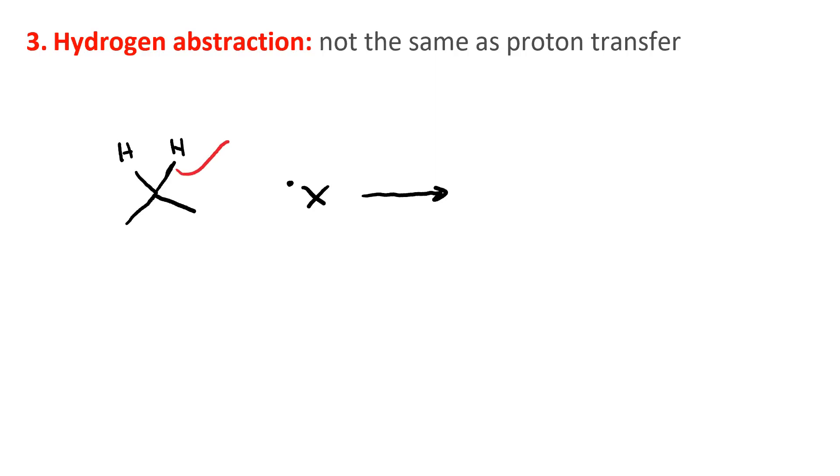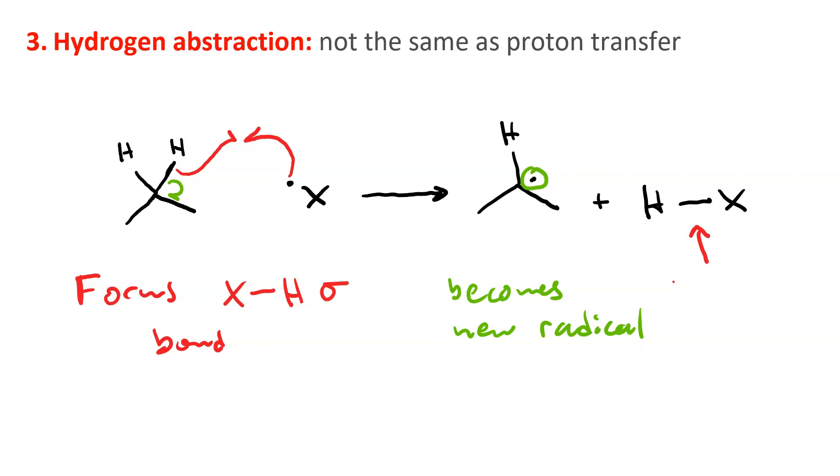One of the electrons from the CH sigma bond couples with the radical electron to form a new CH sigma bond. And the other electron from the CH bond becomes the new radical. There's your new radical. And here is the H-X bond that was formed by the pair of electrons from the red curved arrows.